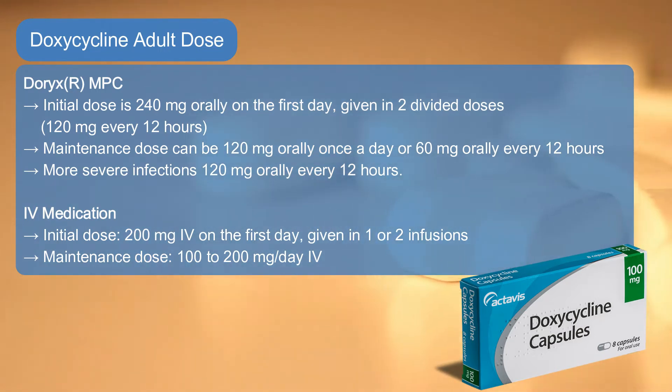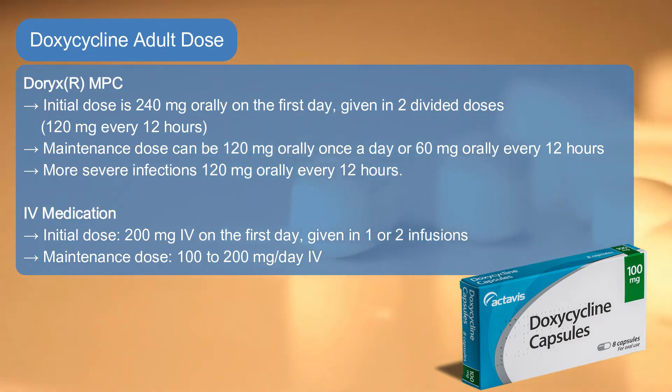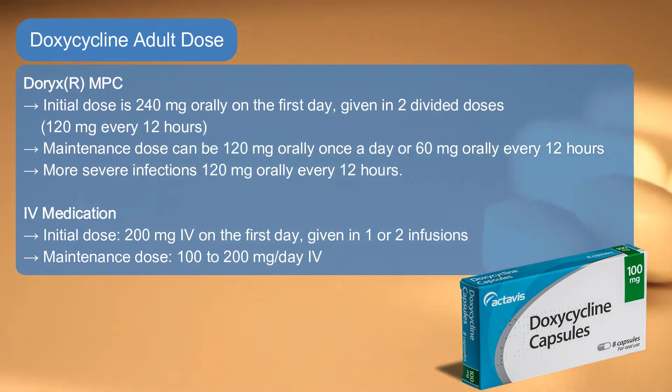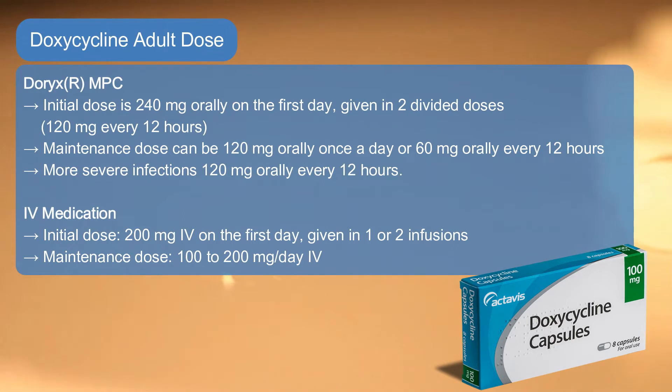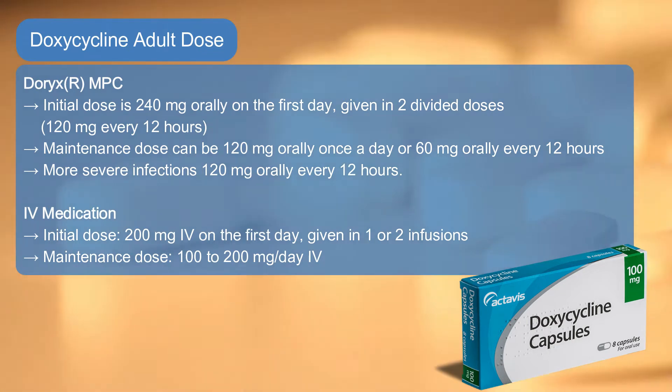IV medication: Initial dose 200 mg IV on the first day, given in 1 or 2 infusions. Maintenance dose: 100–200 mg per day IV.